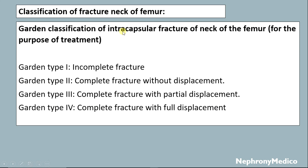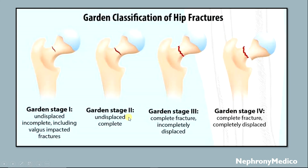Garden's classification of intercapsular fracture of the neck of femur is used for treatment guidance. Garden type 1 is an incomplete fracture. Type 2 is a complete fracture without displacement. Type 3 is a complete fracture with partial displacement. Type 4 is a complete fracture with full displacement. This picture shows Garden's classification: stage 1 undisplaced incomplete, stage 2 undisplaced complete, stage 3 complete fracture incompletely displaced, and stage 4 complete fracture completely displaced.